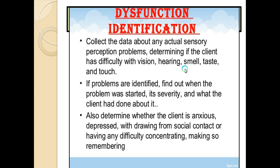To assess for dysfunction: collect data about actual sensory perception problems to determine if the client has difficulty with vision, hearing, smell, taste, or touch. If problems are identified, determine when they started, the severity, and what steps have been taken. Also determine whether the client is anxious, depressed, withdrawing from social contact, or having difficulty concentrating and remembering.